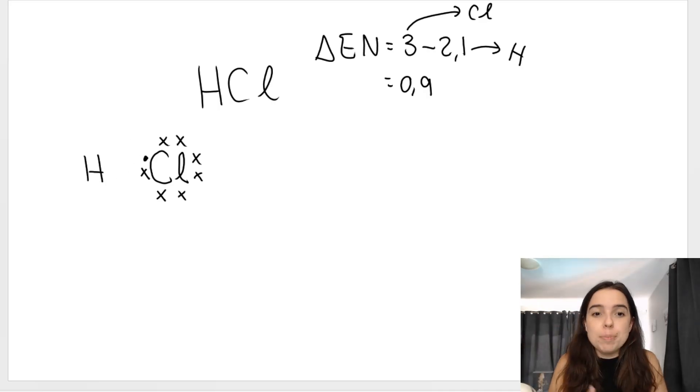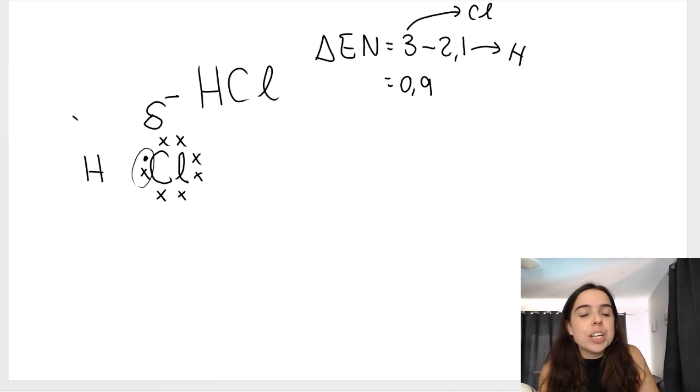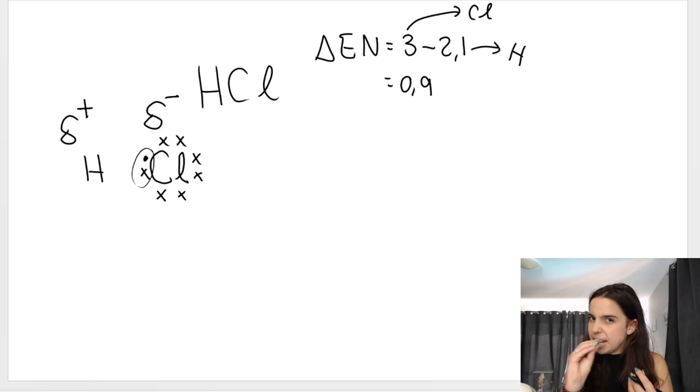So now I'm not going to draw it drastically because they're still sharing it, but the electrons lie closer to the chlorine. So because the chlorine has a bigger electronegativity, we say that it is partially negative, and the hydrogen is partially positive. Partially means a little bit.